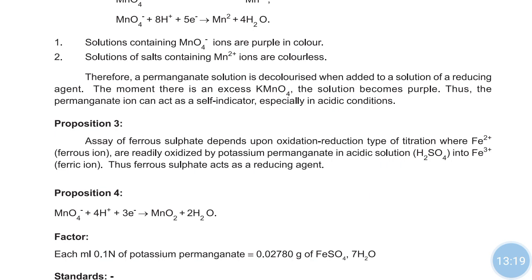In neutral or alkaline medium, MnO2 — that is manganese dioxide, which is brown in color — plus 2H2O is formed. Mostly the reaction is performed in acidic medium, because we need to detect the end point. In acidic medium, conversion to Mn2+ occurs and it is colorless, so it is easy to find out the end point. In neutral medium, the solution is brown in color — MnO2 is brown — making end point detection difficult.